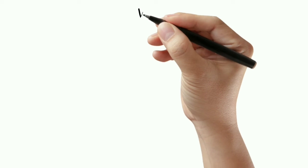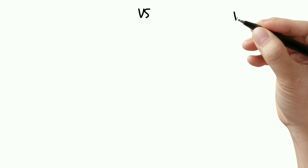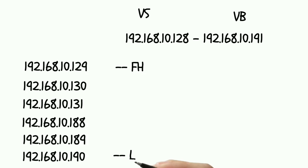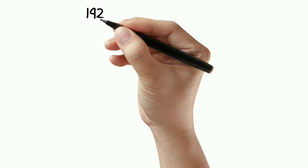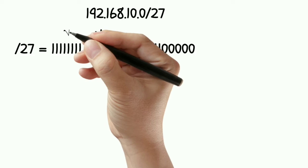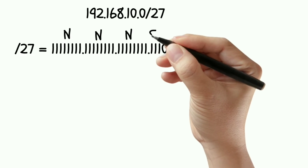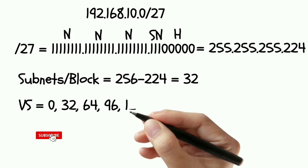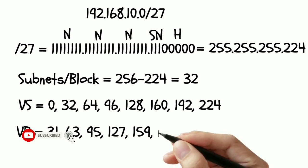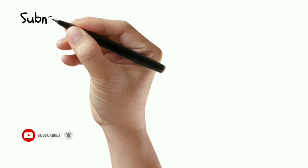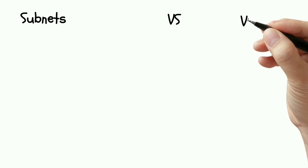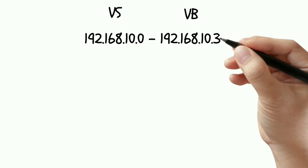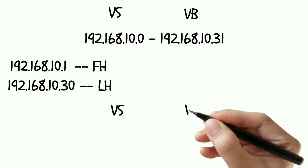There is one more subnet example that shows first host and last host. There is one more example that shows subnet mask calculation, calculating the block size and calculating valid subnet and valid broadcast. Here it shows different subnets of a particular IP address. Among the subnets, we found out first host and the last host.